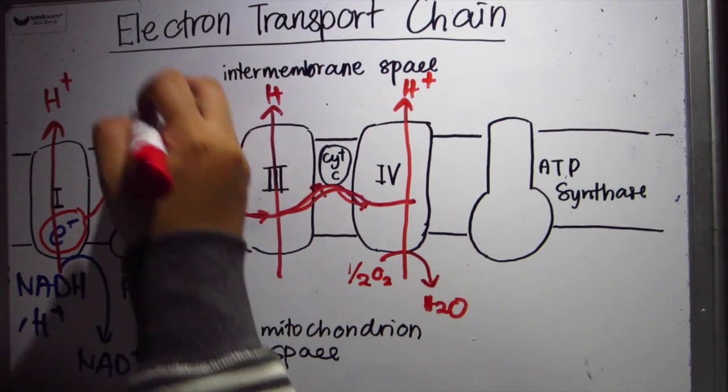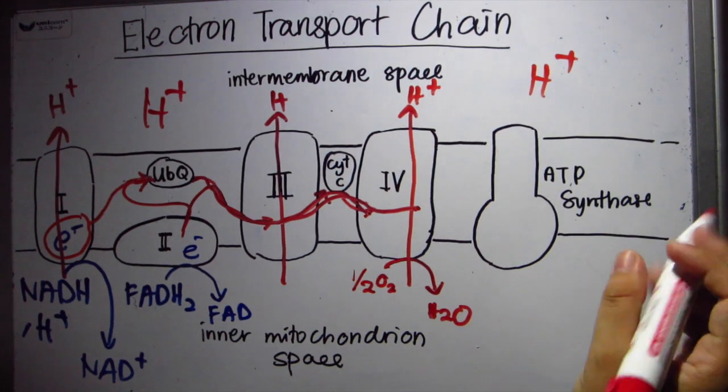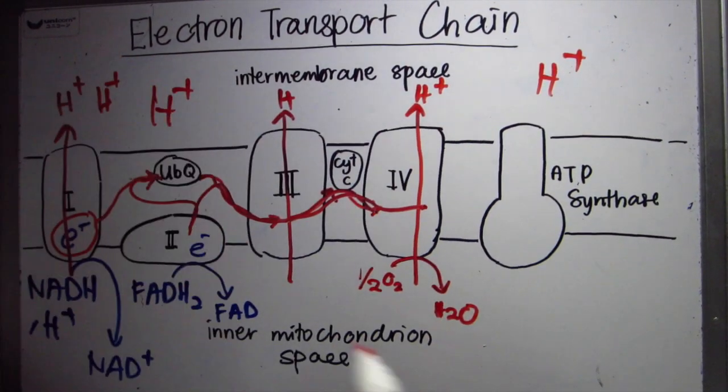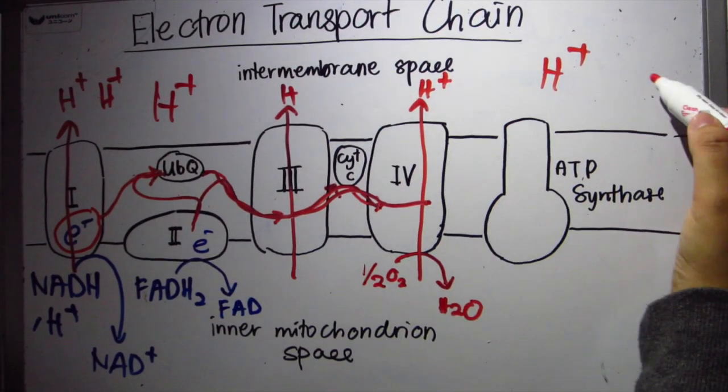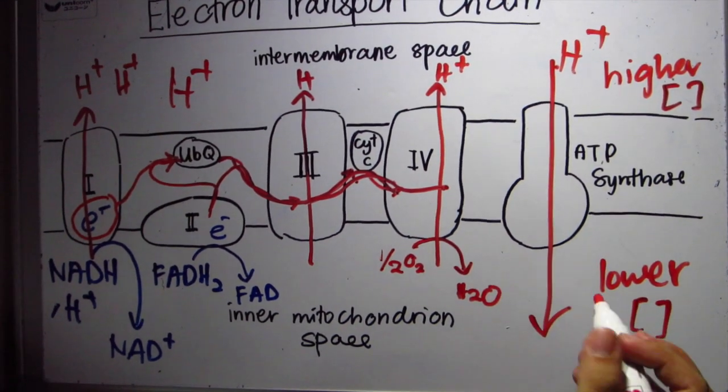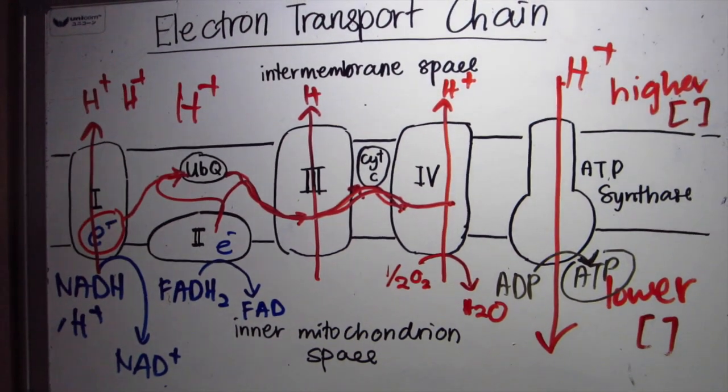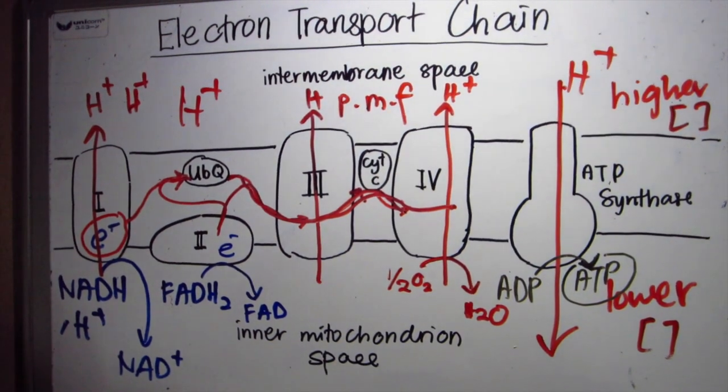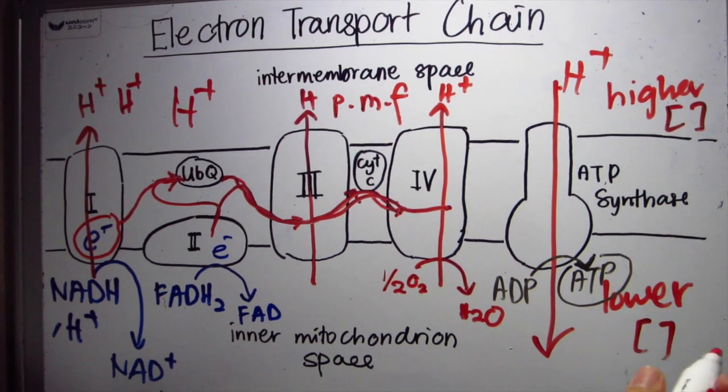The proton concentration builds up in the intermembrane space. A gradient is created and transfers protons from the higher to lower concentration. The energy from the transferred protons changes ADP to ATP. This is called proton motive force. This is oxidative phosphorylation. ATP synthase. This is the end of ETC.